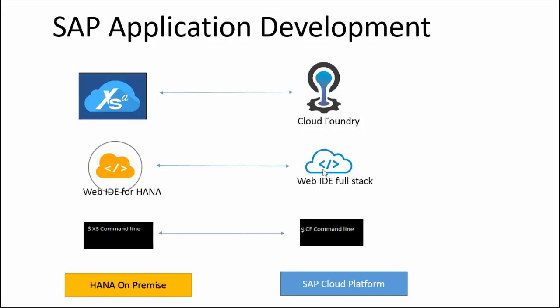On Cloud Platform, you have WebIDE for full stack application to create and deploy applications into Cloud Foundry. We were also using the XS command line tools to deploy objects built using WebIDE for HANA, and this command line can be installed on any virtual machine or on your personal computer. Similarly, in Cloud Platform, we also have Cloud Foundry command line tools which can be installed on your personal computer or virtual machine to access Cloud Foundry objects developed in WebIDE for full stack.